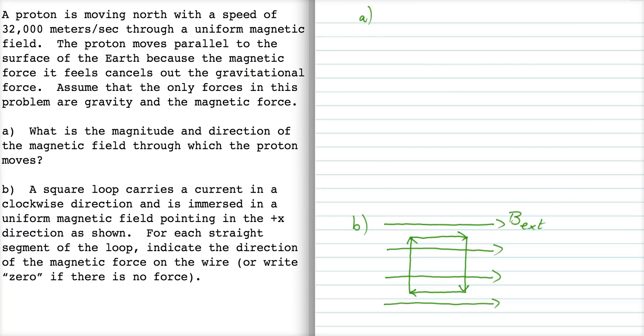Let's say that this proton is moving horizontally and it's got a velocity of 32,000 meters per second. The mass of the proton is from our formula sheet. We're going to need that since gravity is important, and the charge of the proton, we're going to need that since the magnetic force is important.